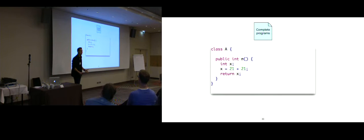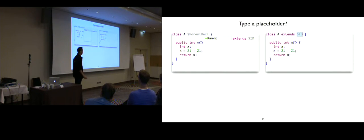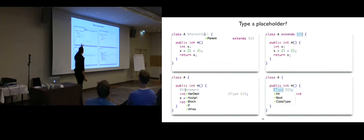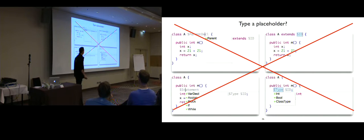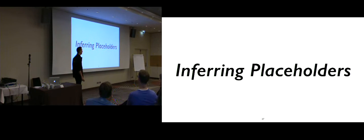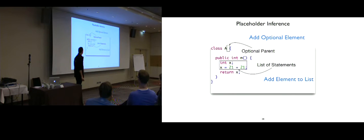But what about a program that doesn't have a placeholder? How do you expand it? One naive solution would be typing a placeholder, positioning the cursor there, triggering code completion, and expanding the program — for example to add an extends clause or a statement to the list. But that's not really an elegant solution. Instead, we use what we call placeholder inference.